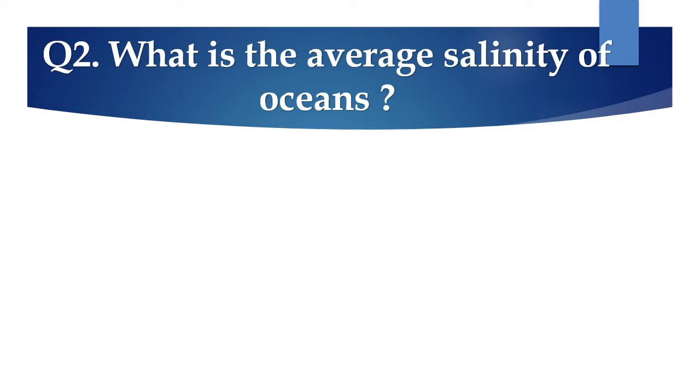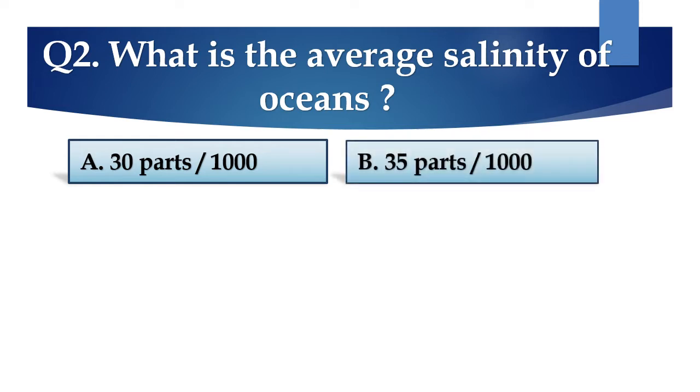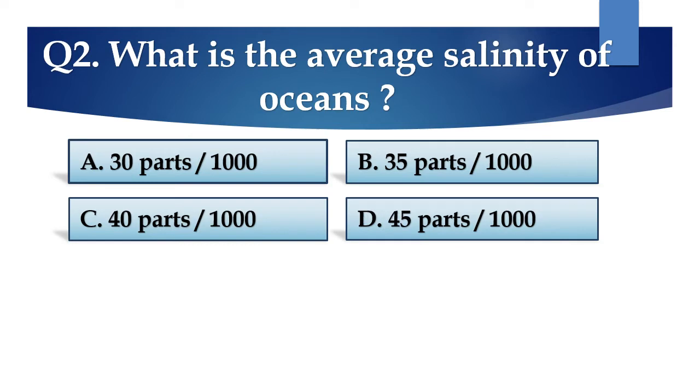Question number 2: What is the average salinity of oceans? The options are: A. 30 parts per thousand, B. 35 parts per thousand, C. 40 parts per thousand, or D. 45 parts per thousand.